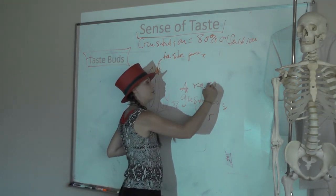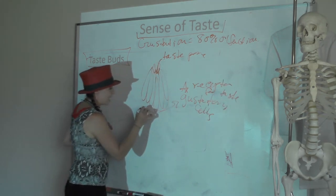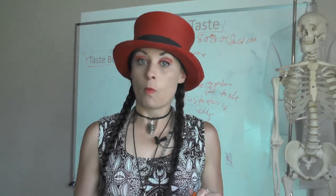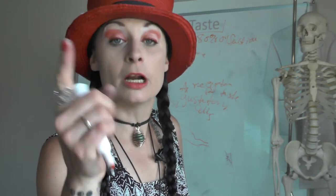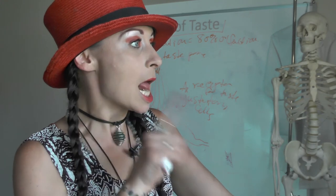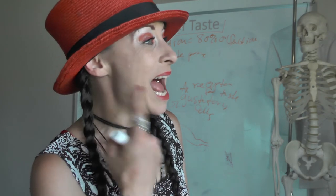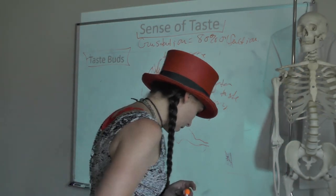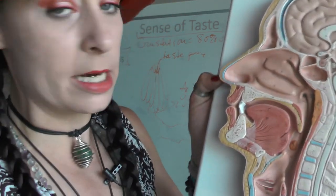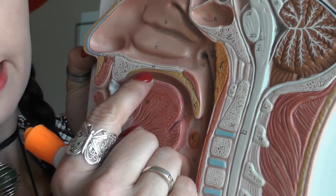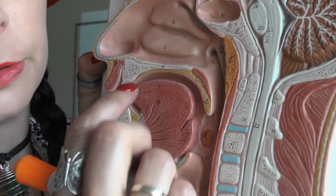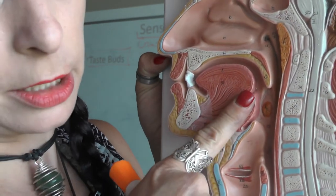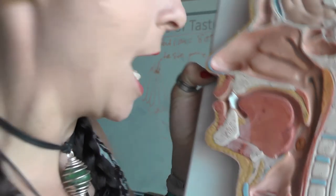The gustatory cells are hooked up to a sensory neuron running in one of two cranial nerves: the facial nerve, which responds to taste sensations from the anterior two-thirds of your tongue, and the glossopharyngeal nerve, which responds to the posterior one-third. Your epiglottis and larynx also have some taste buds, and if you're vomiting your vagus nerve can be aware of that.